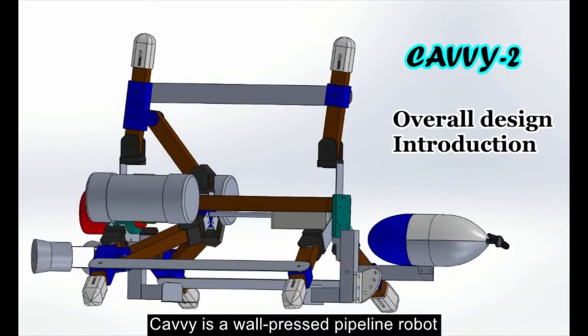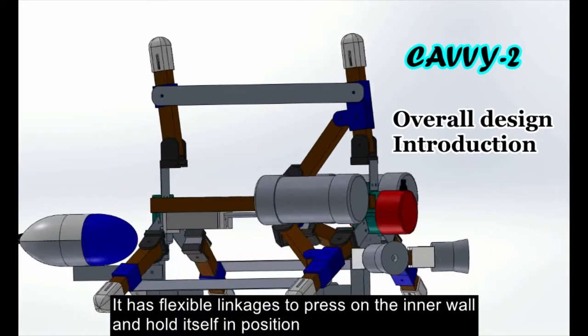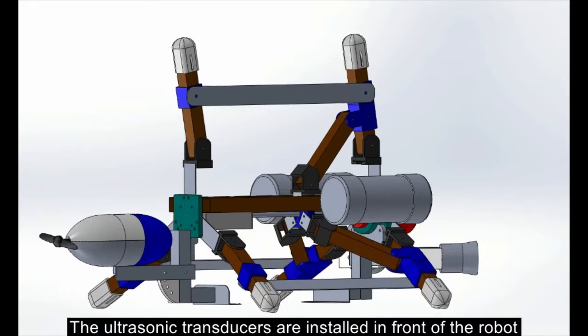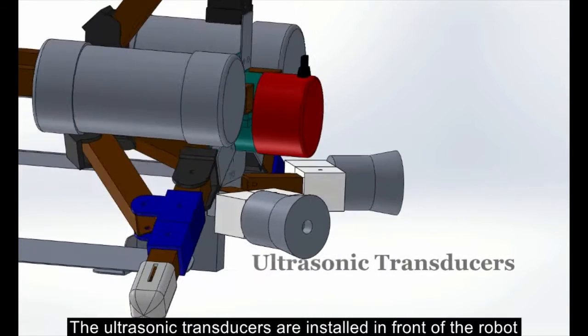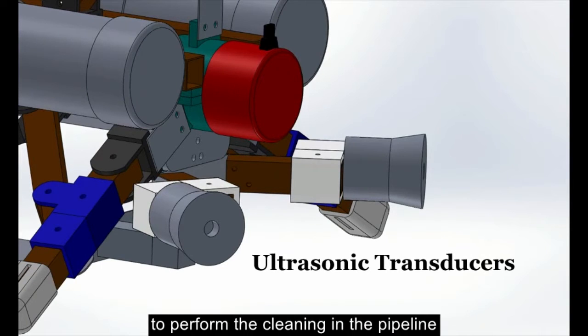CAVVY is a wall-pressed pipeline robot. It has flexible linkages to press on the inner wall of the pipeline and hold itself in position. The ultrasonic transducers are installed in front of the robot to perform cleaning in the pipeline.